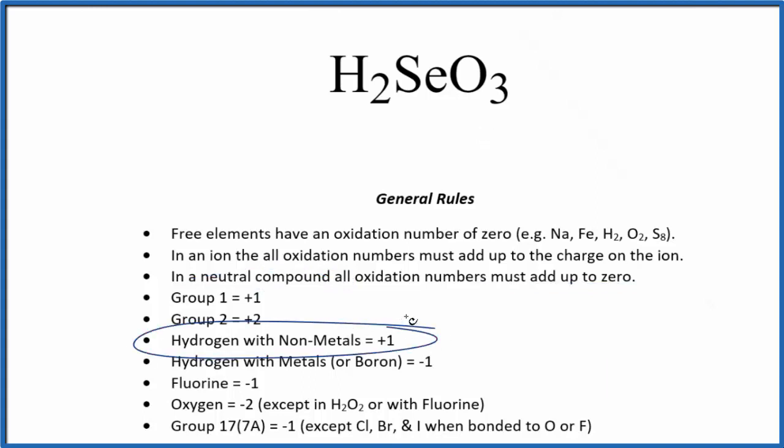We know that when hydrogen is bonded to non-metals, it's plus one. So here each hydrogen is plus one. Se, we don't know what that is. But oxygen is almost always negative two, with a few exceptions. Here it's negative two.